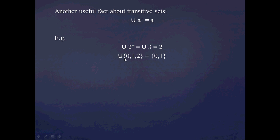To see why: 2+ is just equal to 3, which is {0, 1, 2}. So the union of {0, 1, 2} should be equal to {0, 1}. Expanding out the set {0, 1, 2}, I get: the empty set, the set containing 0, and the set containing 0 and 1.